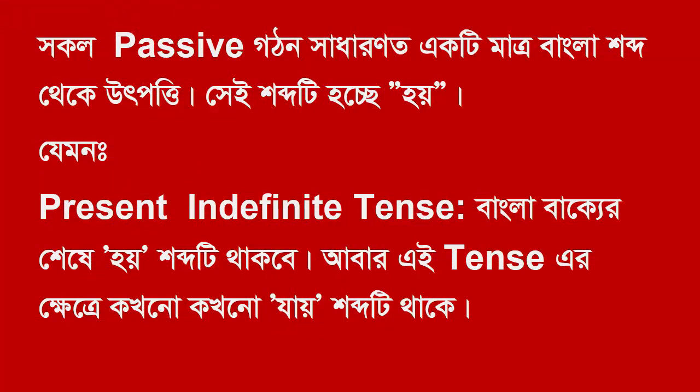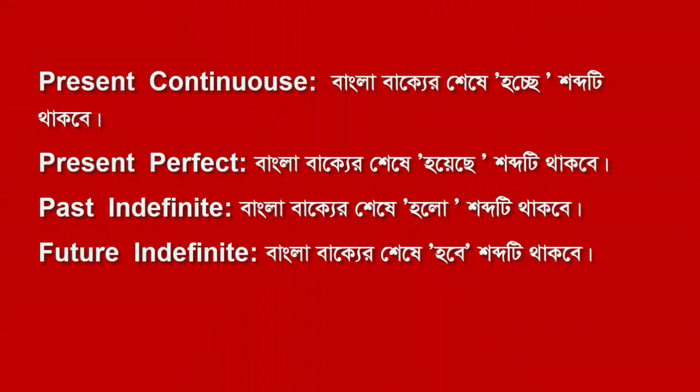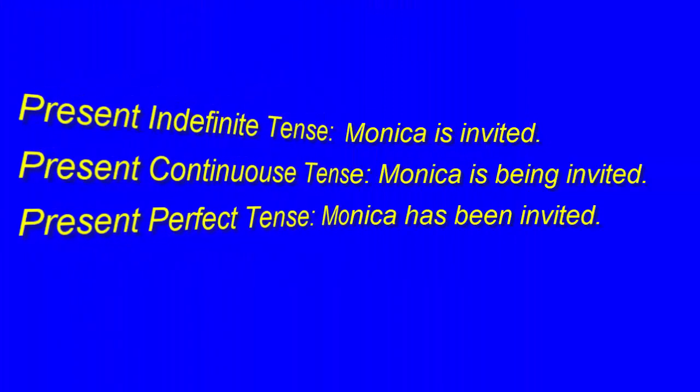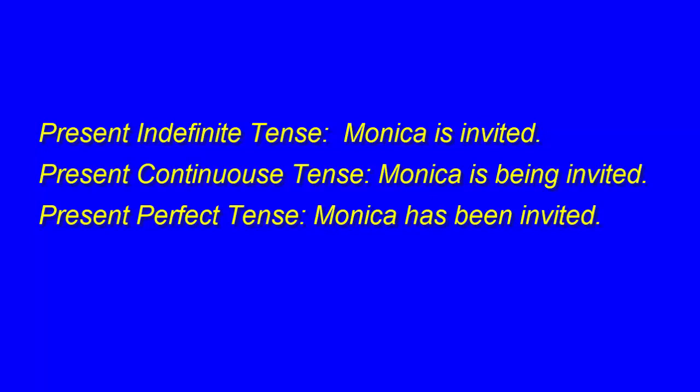For the Present Indefinite tense passive, the auxiliary verb changes accordingly. For Present Continuous tense passive, the auxiliary changes. For Present Perfect tense passive, the auxiliary changes as well.